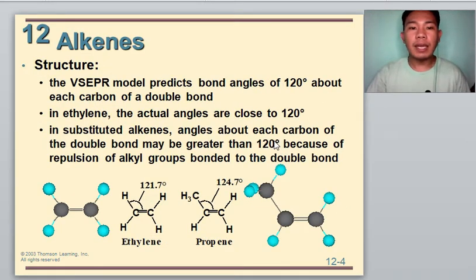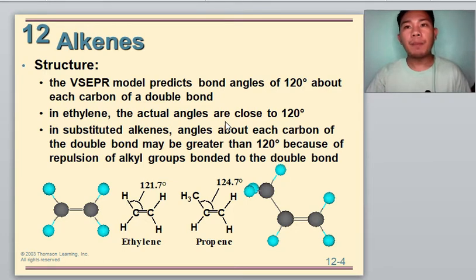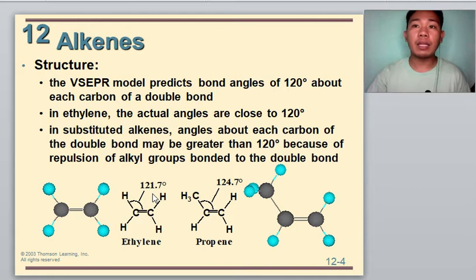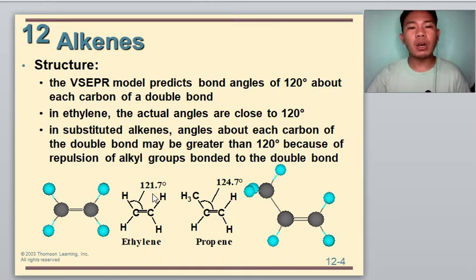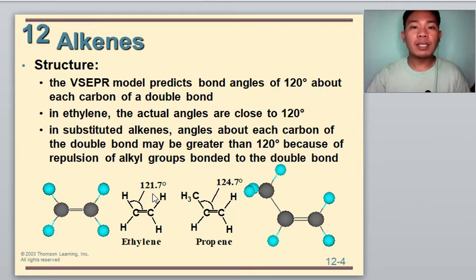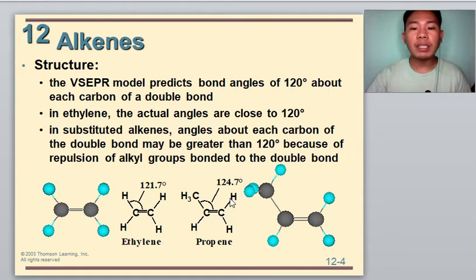Using the VSEPR model, we can predict bond angles of 120 degrees about each carbon in a double bond. The observed H-C-C bond angle in ethylene, for example, is 121.7 degrees, which is close to the predicted value of 120 degrees. In other alkenes, deviations from the predicted angle of 120 degrees may be somewhat larger because of interactions between the alkyl groups bonded to the doubly bonded carbons. For example, the C-C-C bond angle in propene is 124.7 degrees.